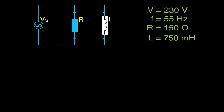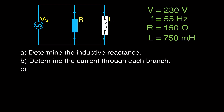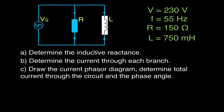So here we have an RL parallel circuit. We have an alternating voltage source, an R for a resistor, and an L for an inductor. The voltage is 230 volts, the frequency is 55 hertz, the resistance of the resistor is 150 ohms, and the inductance of the inductor is 750 millihenries. In this video we're going to answer all of these questions and a little more.